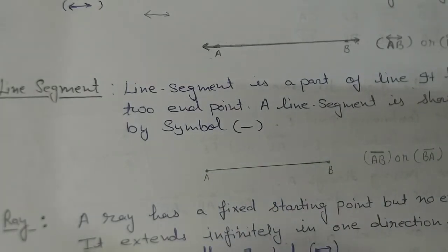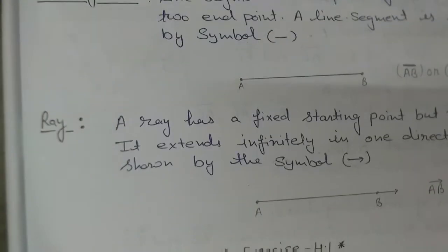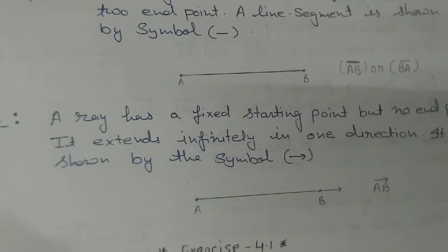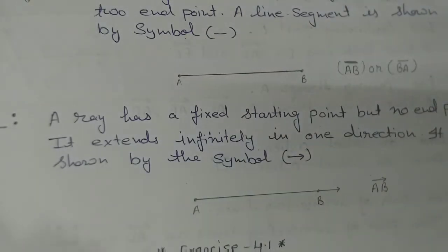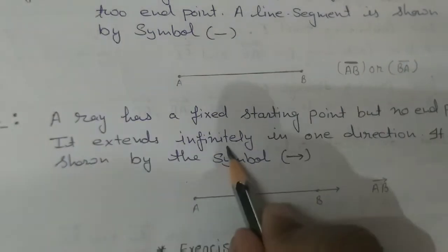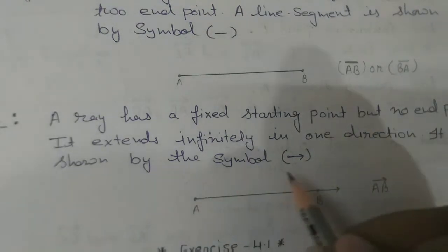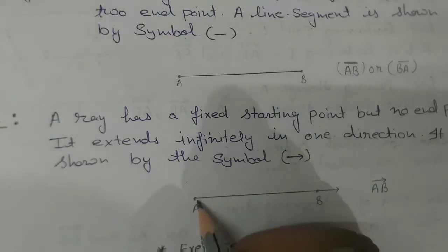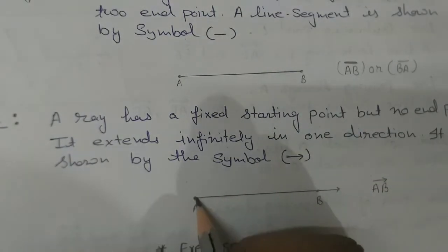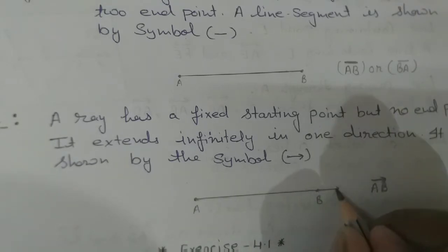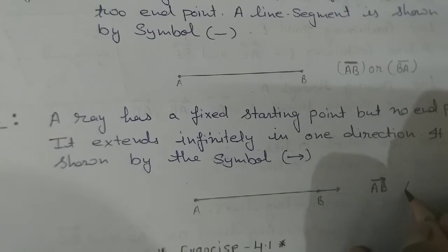Now the next definition is ray. A ray has a fixed starting point but no ending point. The starting point we know, but the ending point we do not — it extends infinitely in one direction. It is shown by an arrow symbol. So you can see this way it continues — ray AB continues in one direction.